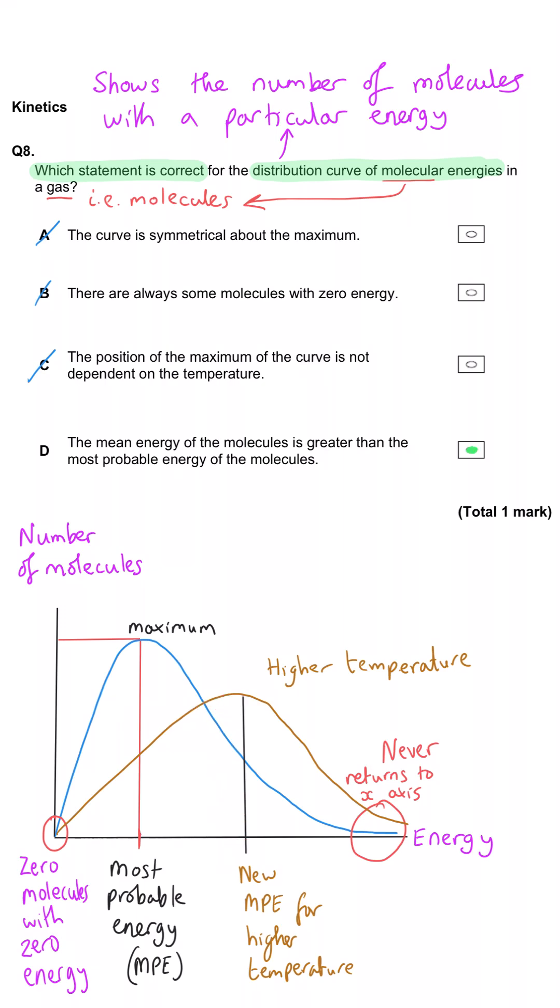That means that D must be correct. The mean energy of the molecules is greater than the most probable energy of the molecules.